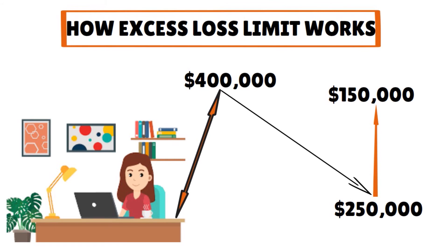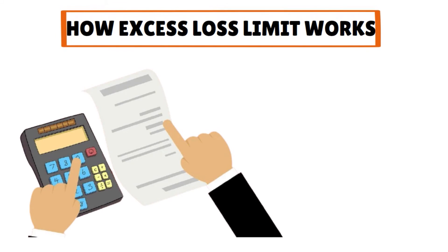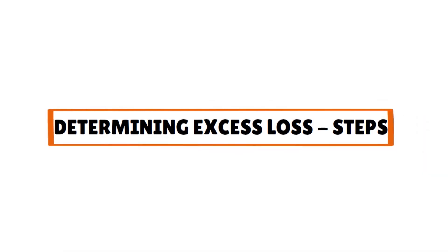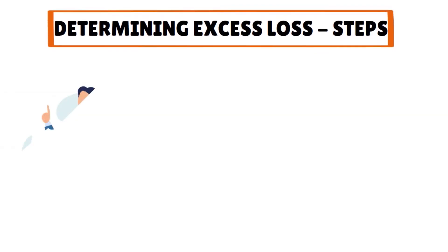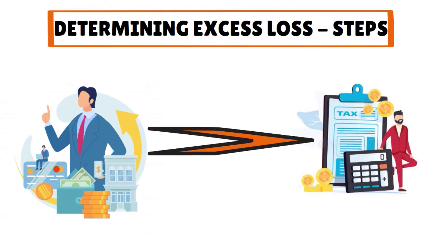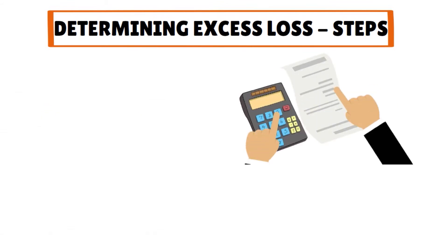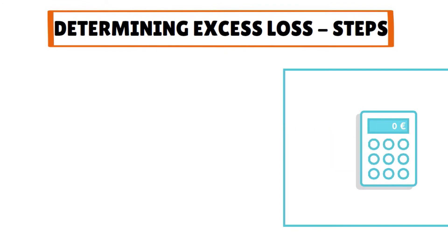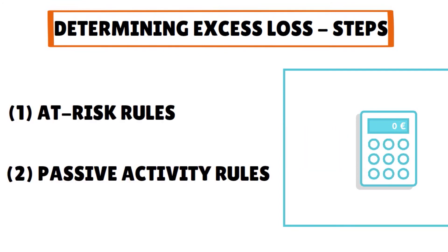These examples are oversimplified. The calculation of excess business loss is complicated, and other factors on an individual tax return — including at-risk rules and passive activity rules — may affect the excess loss. To determine excess loss, your total income and losses from all businesses and personal sources are collected on your personal tax return. You must calculate your net operating loss — the loss from normal business operations. Before you calculate the excess business loss, you must first apply at-risk rules and then passive activity rules.